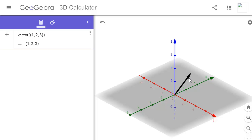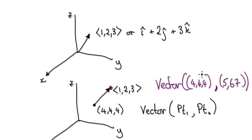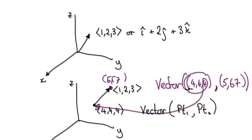Now we want the vector floating at the point (4, 4, 4). So going back — if we want it floating at (4, 4, 4) and the vector itself is (1, 2, 3), we have to use the two-point syntax. Because the start location is (4, 4, 4) and the vector is (1, 2, 3), the endpoint is actually (5, 6, 7).